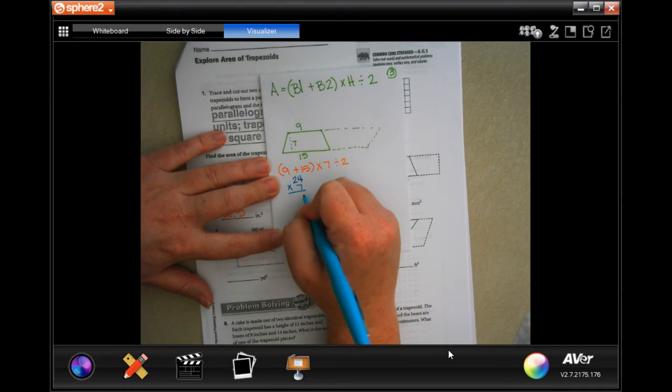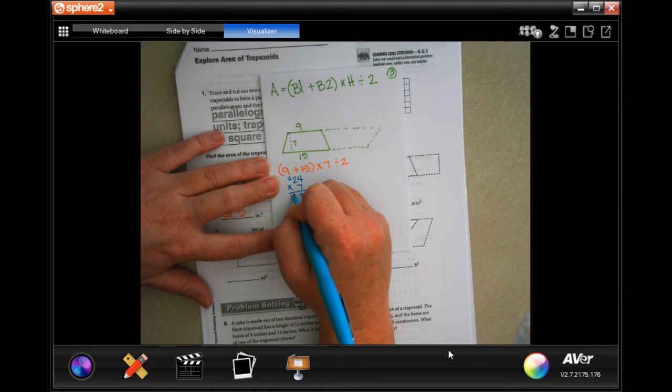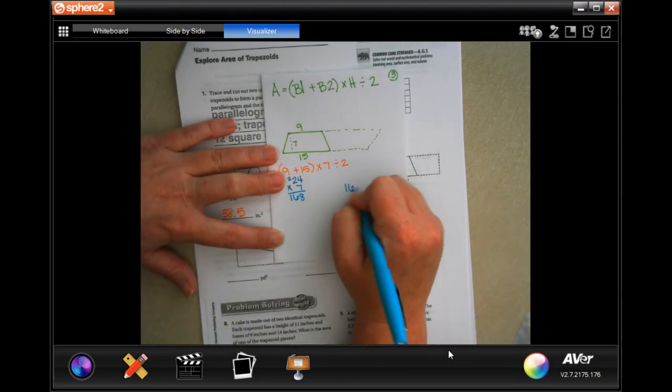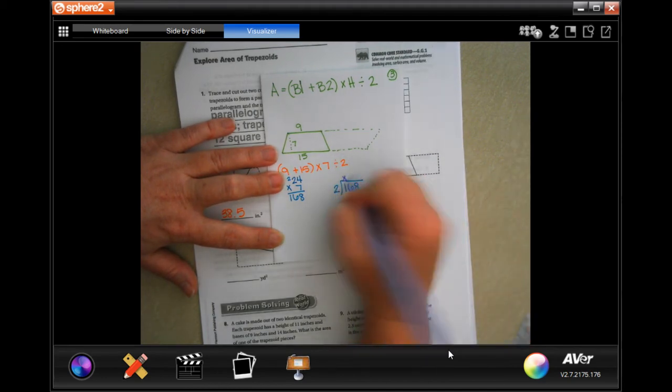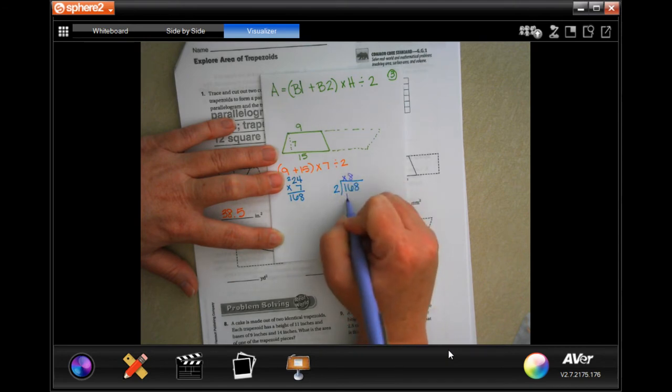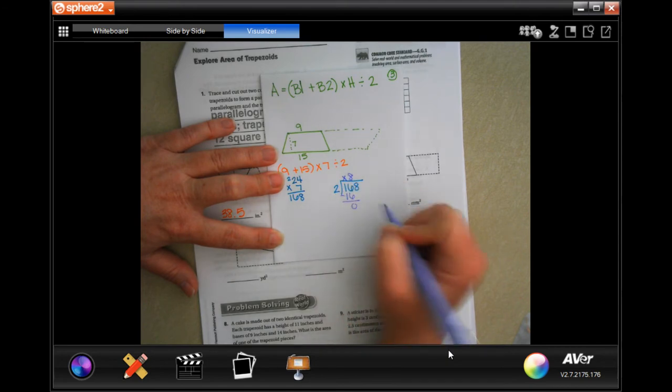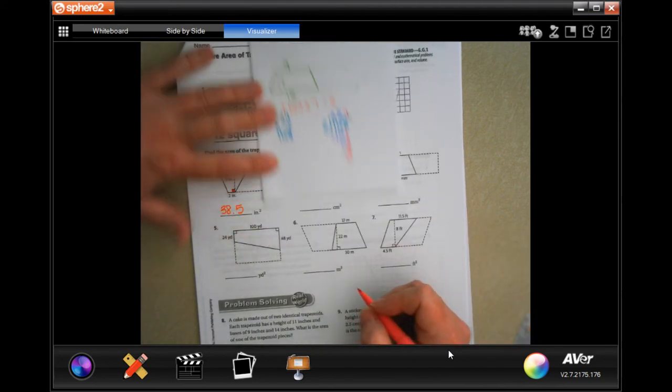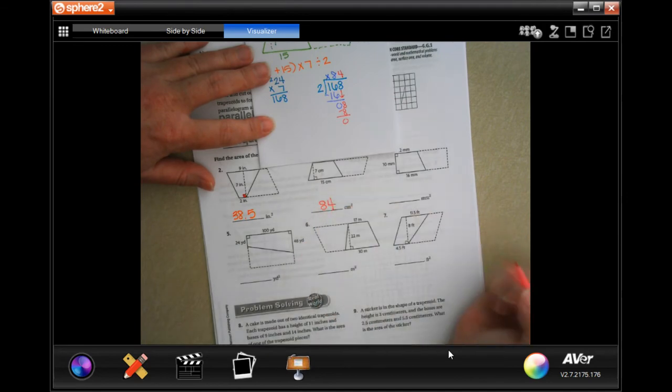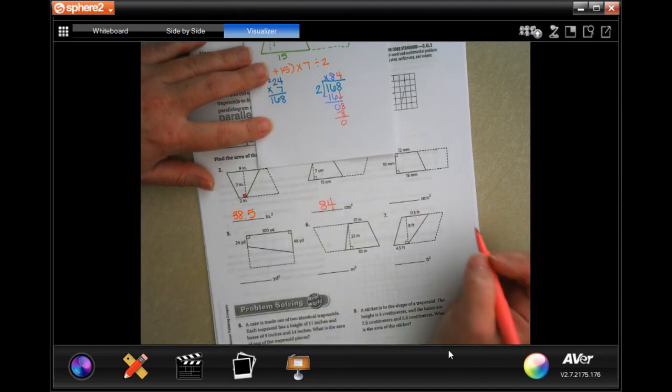So 7 times 4, 28, carry that 2. 7 times 2 is 14, plus 2 more is 16. So now I have 168, and I'm going to divide that by 2. 2 is not going to go into 1, placeholder. 2 will go into 16, 8 times. 8 times 2 is 16, subtract and get 0. 0 is definitely smaller than 2, so I'm going to bring down my 8. And 2 goes into 8, 4 times. 4 times 2 is 8, subtract and get 0. So 84. The centimeters is already written for you.